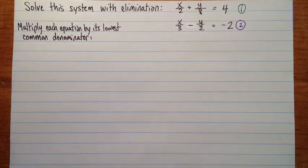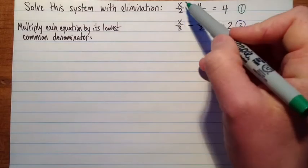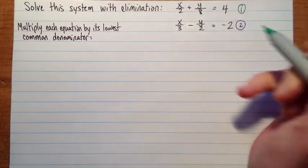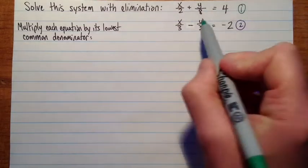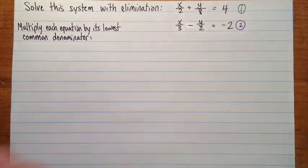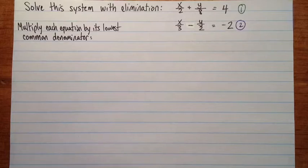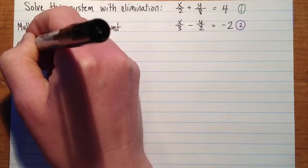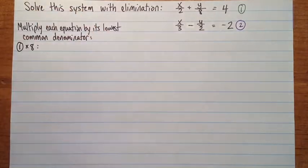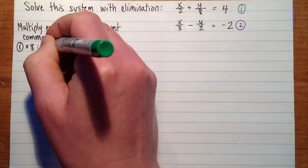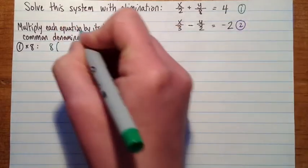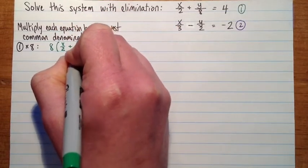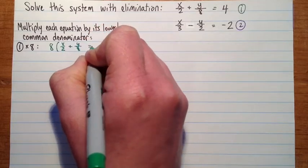Okay, so what that means in the case of equation 1, we've got x over 2 plus y over 8. So the lowest common denominator is the lowest common multiple of those, and it'll be 8. So we're going to do number 1 times 8. So that gives us 8 times x over 2 plus y over 8 equals 4.